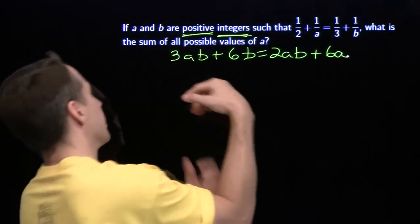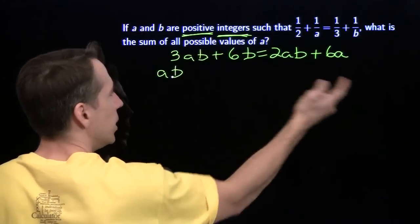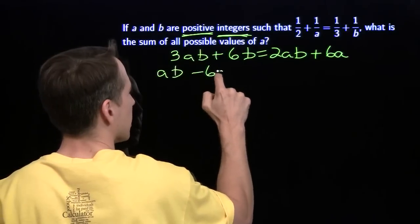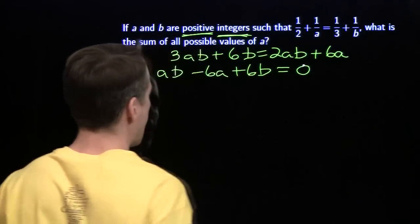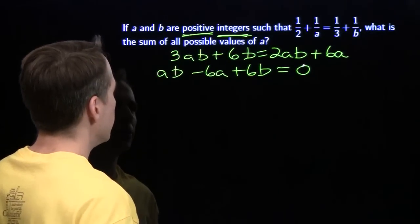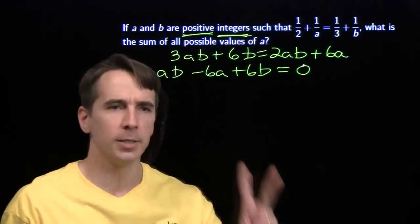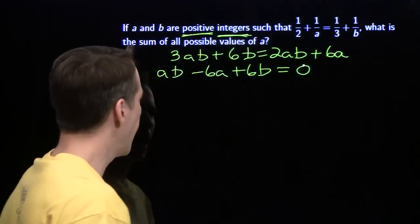Let's bring everything over to this side. Subtract 2ab from both sides. We get ab, subtract the 6a, we get minus 6a, we still have the 6b over here. All that equals 0. Now we're a little stuck. We're going to do problem-solving strategy number 2: solve for the variable you care about. We care about a.